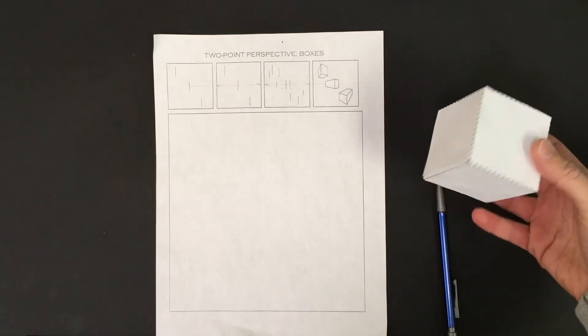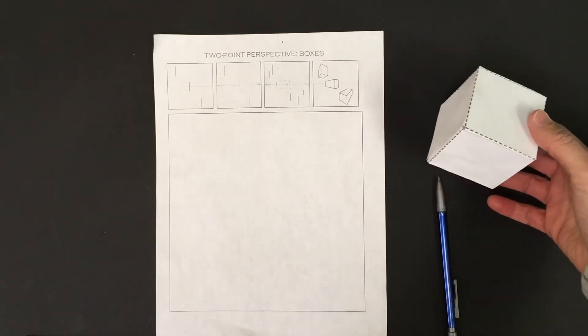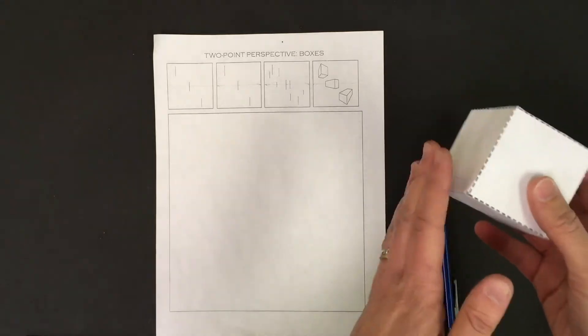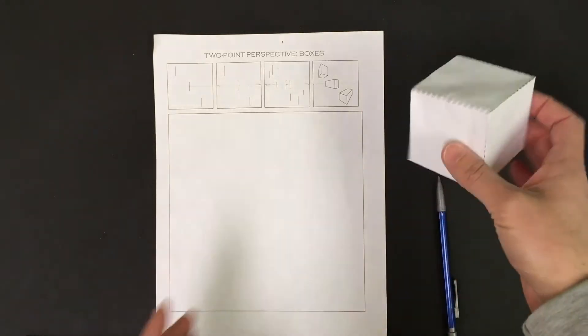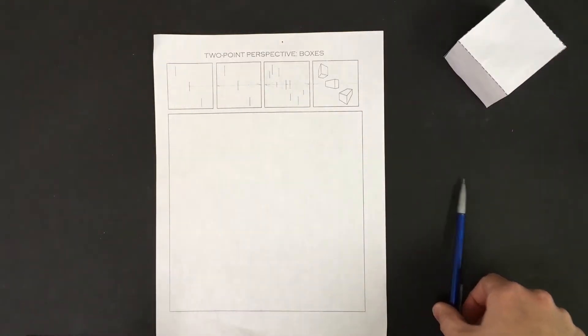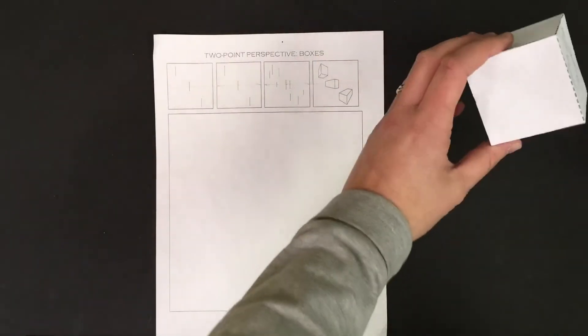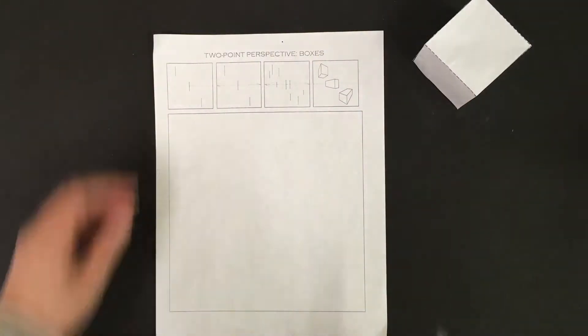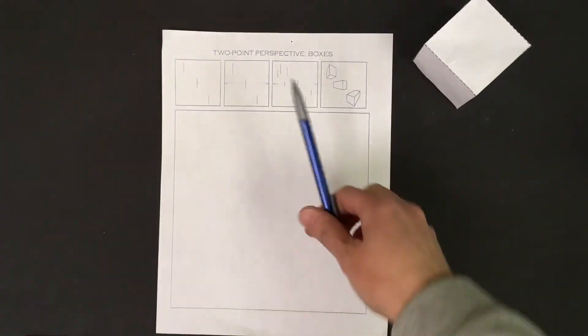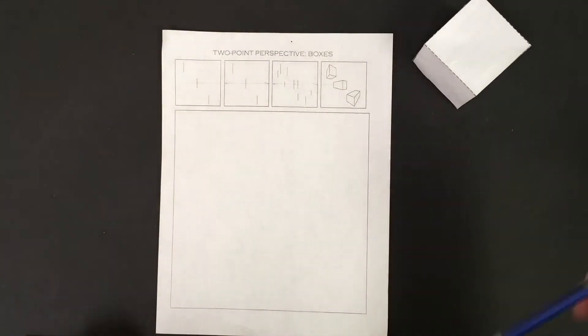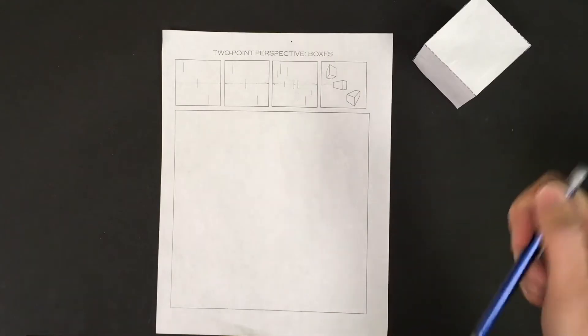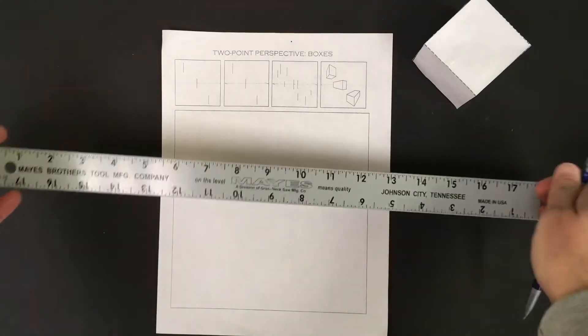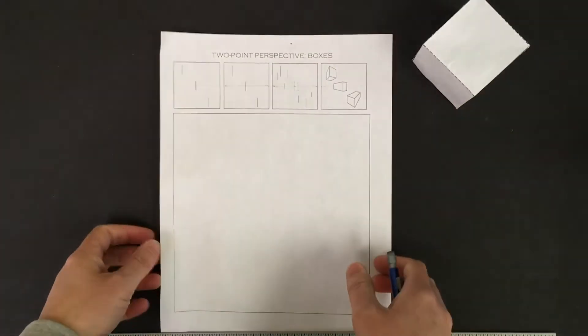Here we are, time to do a little boxes warm up. If you've got your cube with you, our practice cube that we created together for understanding some of these vocab terms, awesome. Make sure you got it. If you don't have it, no worries, I got one. You can just see what I'm doing up here on our video screen.